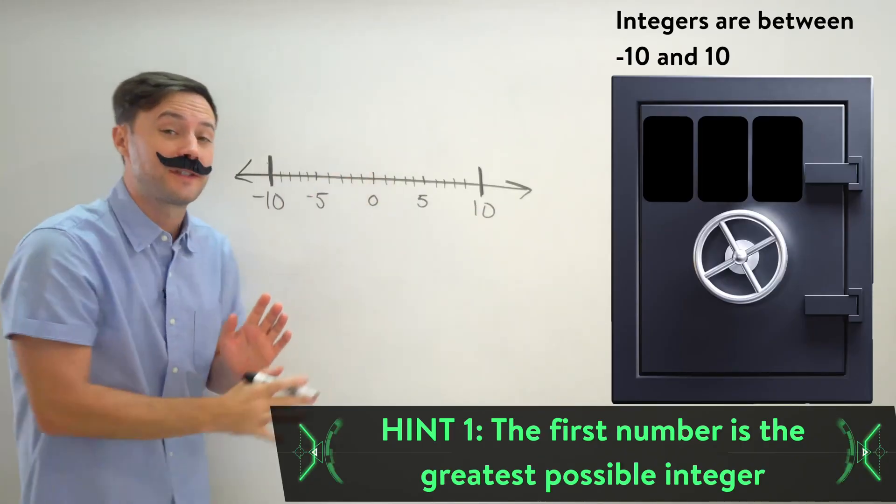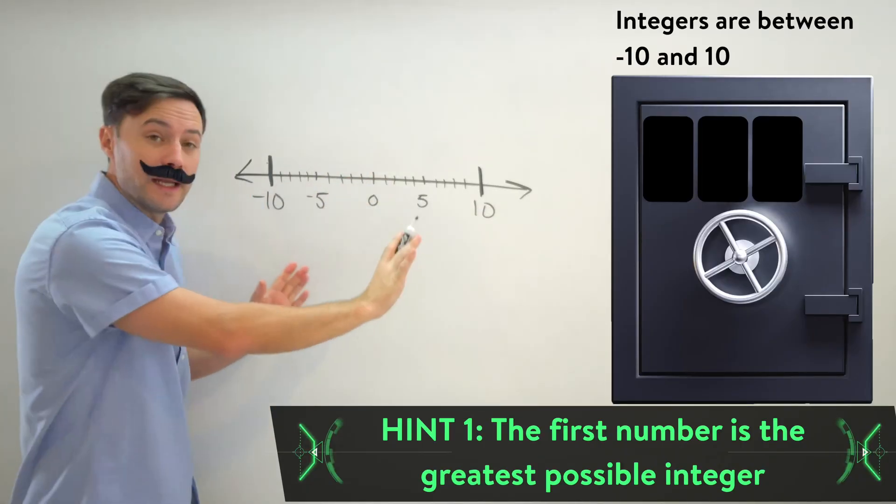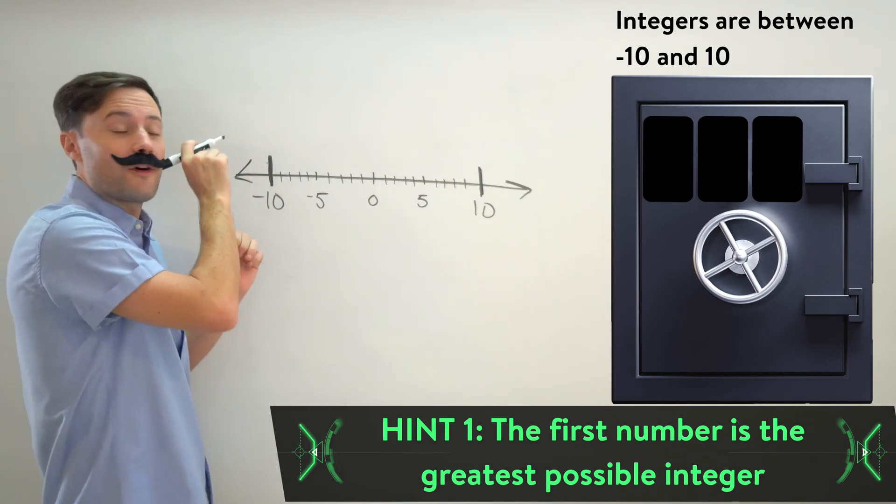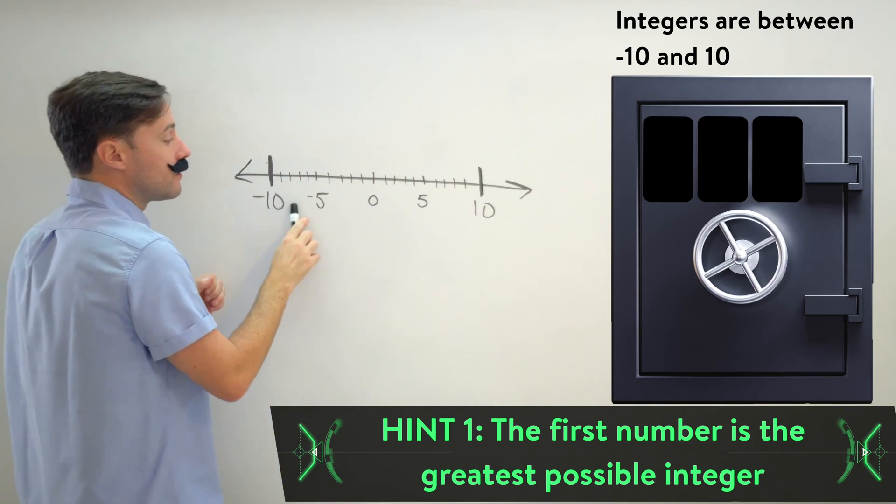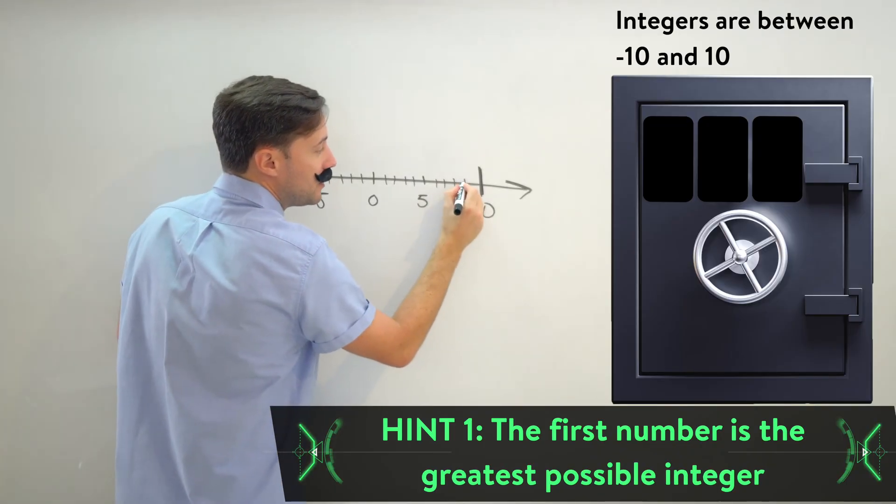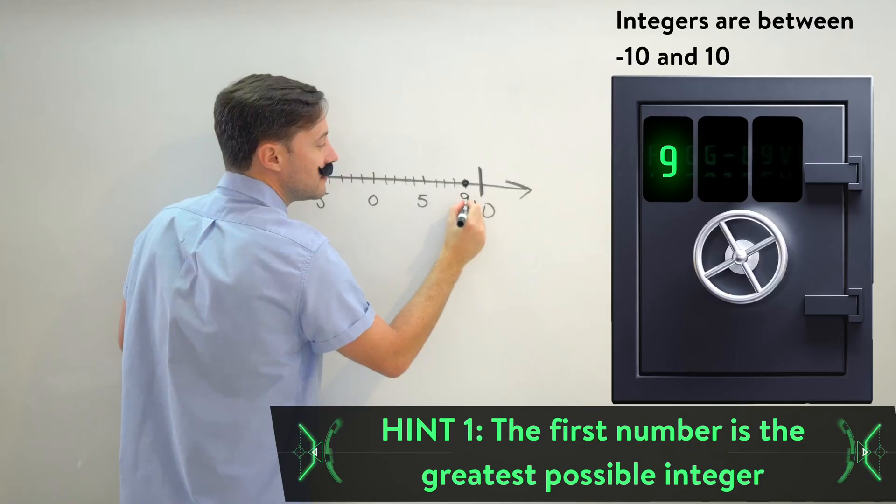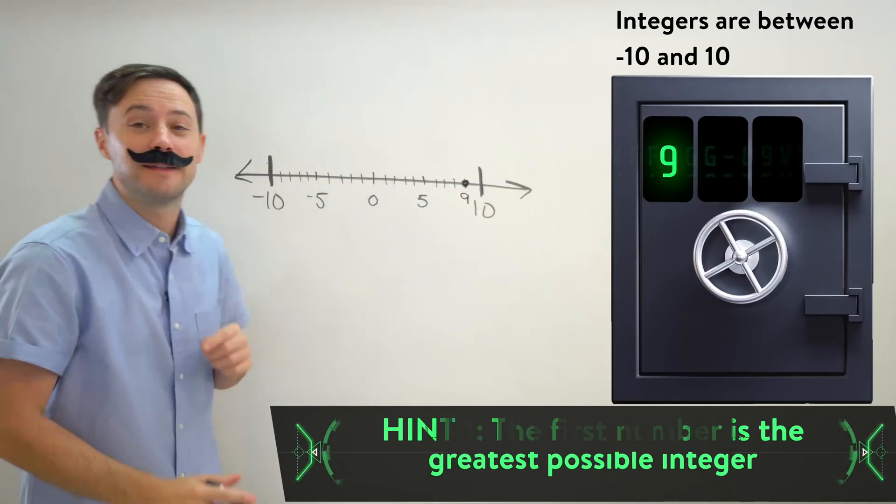So for that first digit, if we want the greatest of the possible integers, well that means the farthest to the right. Well, the farthest to the right of the possible would be right here, which is 9. So 9 is our first digit.